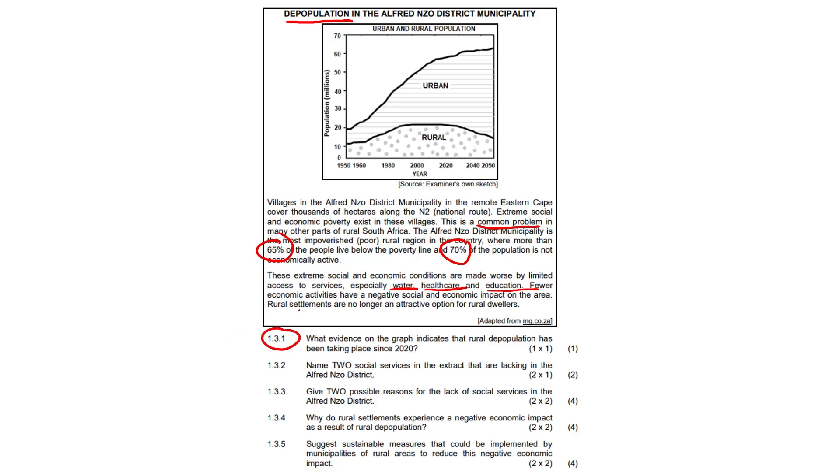1.3.1 What evidence on the graph indicates that rural depopulation has been taking place since 2020? Well, since 2020 there's been a decline in the population of rural areas. 1.3.2 Name two social services in the extract that are lacking in the Alfred and Zor district. Water, health care, or education.